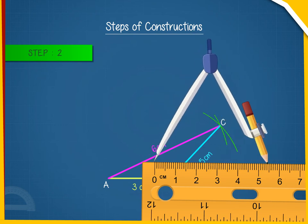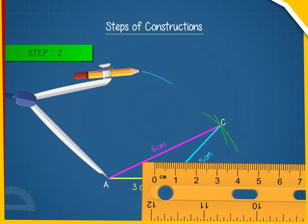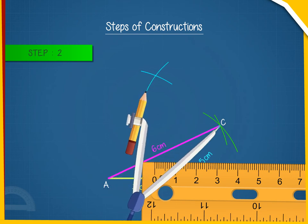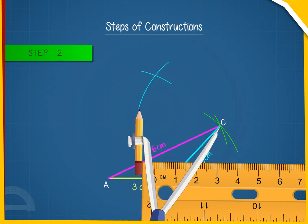Taking A as center and radius 5.5 cm, draw an arc. Taking C as center and radius 4 cm, draw another arc, cutting the previous arc at D. Step 3.